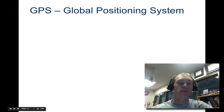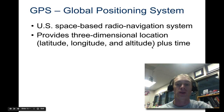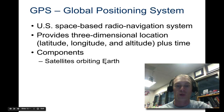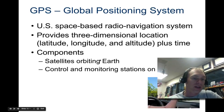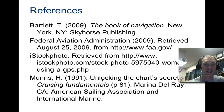Finally, let's look at GPS — the Global Positioning System. This is a U.S. space-based radio navigation system that provides three-dimensional location: latitude, longitude, and altitude, along with a time stamp for that position. The components required are multiple satellites orbiting Earth, ground control and monitoring stations, and GPS receivers owned by users to access the information. More on GPS to come — and that's it for navigation.